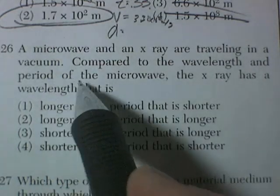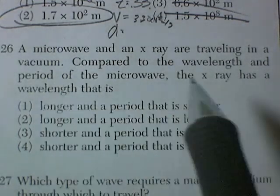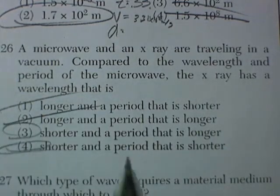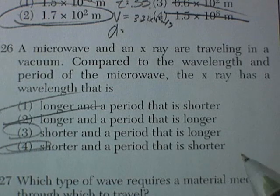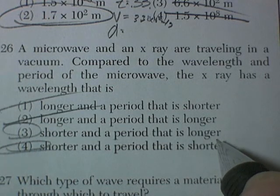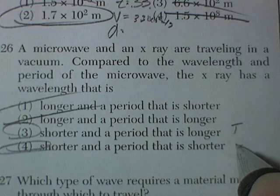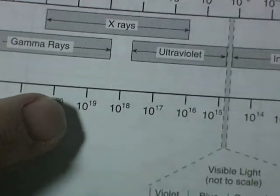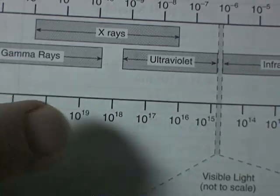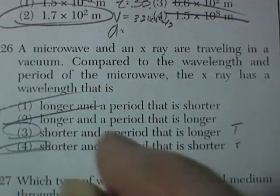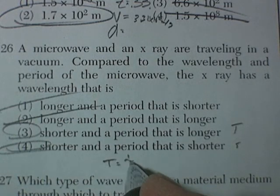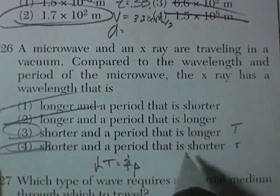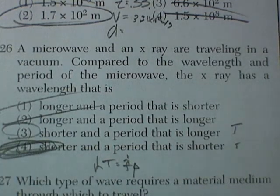Let's see. X-rays have a much shorter wavelength. So compared, the X-ray has a wavelength that is shorter. So it's got to be these here. And a period that is longer. So more time or less time. Well, the frequency is higher as you get this way towards the X-rays. So the period would be smaller because period is, in fact, one over frequency. So the higher the frequency, the smaller period. So shorter and the periods that are shorter. Option four would be the correct answer.